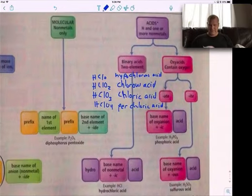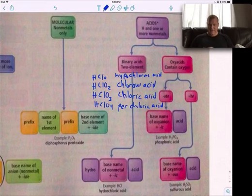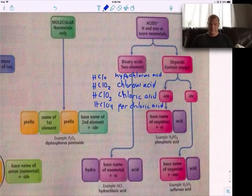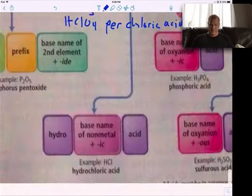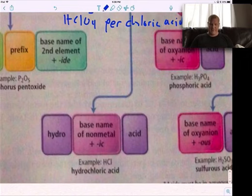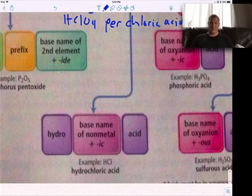Now, acids, we didn't cover this yet, so I'm going to cover here. In acid, if it's two element, you go here and you say the word hydro, base metal name plus ic, then the word acid. So, HCl, hydrochloric acid. If it's HBr, it's hydrobromic acid.